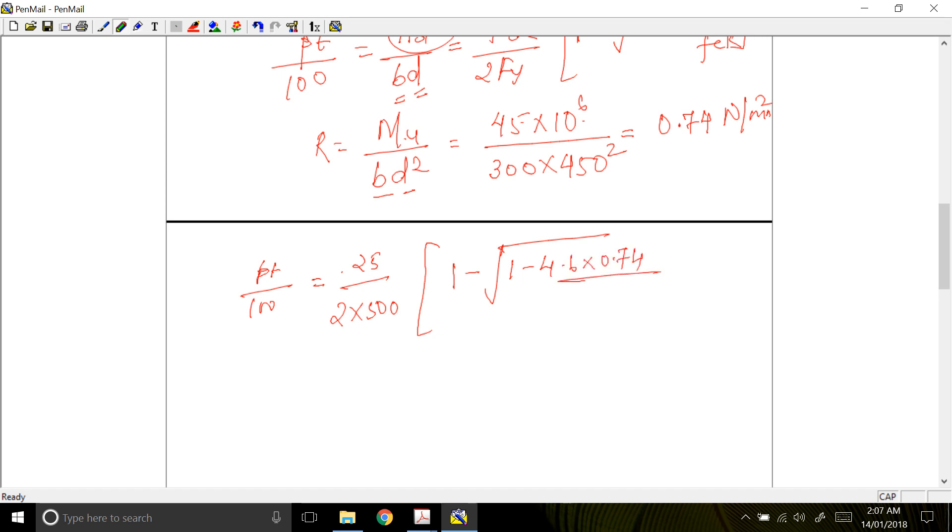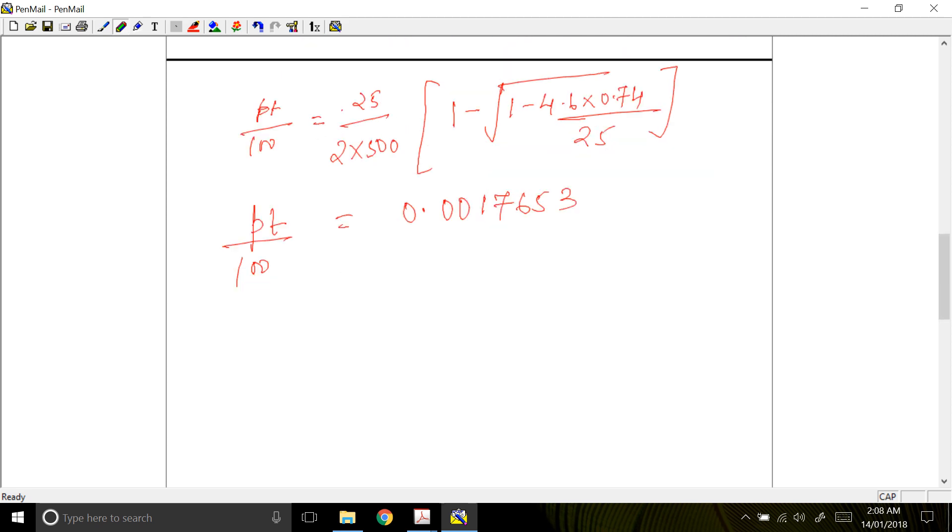Which is equal to 0.0017653. So Pt by 100 is equal to 0.0017653. So Pt, that is percentage, is equal to 0.0017653 into 100, which is equal to 0.17653%.